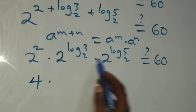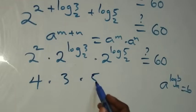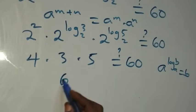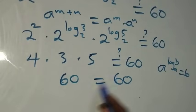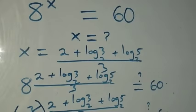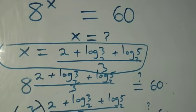That gives us four times three times five, which equals sixty, and this equals sixty on the right-hand side. The left-hand side equals the right-hand side. Hence we conclude that x equals two plus log₂3 plus log₂5, all over three, satisfies this given problem. Thank you for watching — don't forget to subscribe for more videos, turn on the notification bell, share this video, give it a thumbs up, and put your comments. See you next class, bye for now.